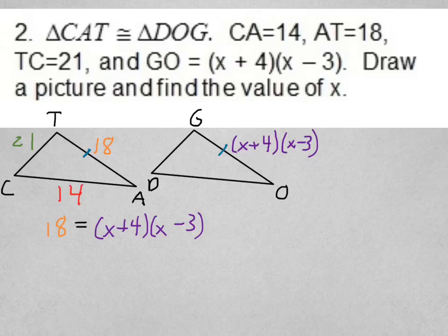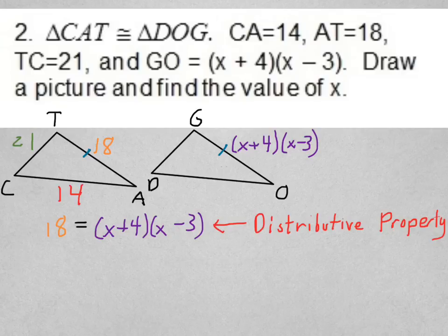Those two are congruent. So I would say the 18 is equal to X plus 4 times X minus 3. The 21 and the 14 don't really matter. That's just extra information, but we don't need it. Now, I said this was quadratic earlier. Do you believe me? Well, yes it is. Because if we use the distributive property, then we can see that that's quadratic.